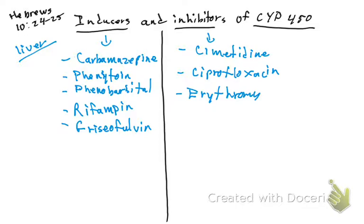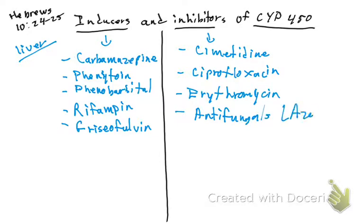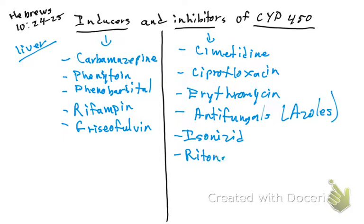Erythromycin is an inhibitor of the CYP450. The next inhibitors are the antifungals — specifically the azoles. Then we have isoniazid, and also ritonavir, which is a protease inhibitor — it inhibits the enzyme called protease.